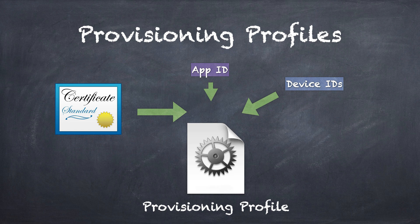The provisioning profile defines the rules for running the app inside the device. Its role is to confirm: first, it is a specific app with an app ID. Second, it is an app with an app ID that can run on certain devices included in the provisioning profile. The development provisioning profiles have the list of devices included, whilst distribution provisioning profiles don't have the list of devices. Third, the app only has those entitlements defined in the provisioning profile. Finally, the app can only run based on the certificate embedded in the provisioning profile.